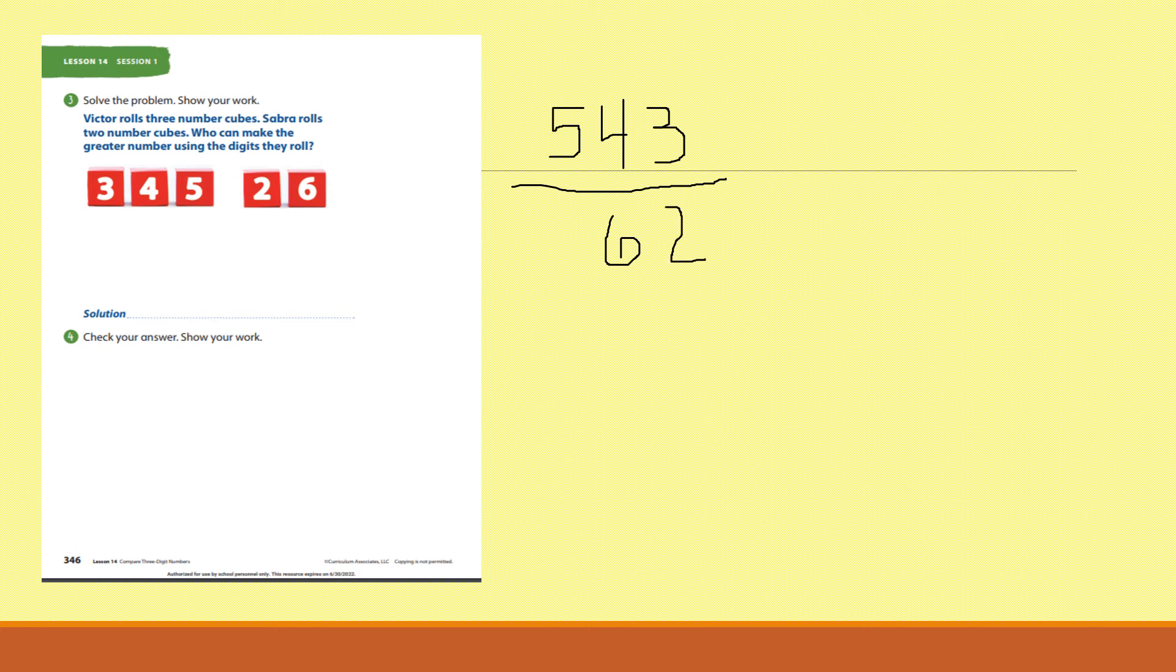Who can make the greater number? Victor can make the greater number, five hundred and forty-three, because Victor has hundreds. Sabra doesn't. Sabra's number starts with tens. It says, check your answer and show your work. Well, we just checked our answer right here. And we showed our work.